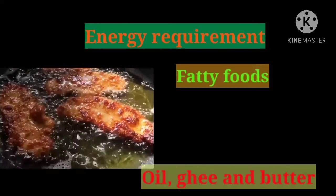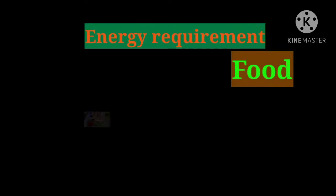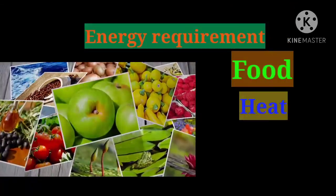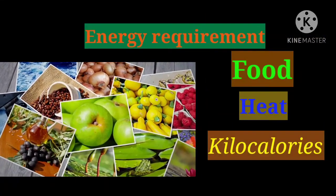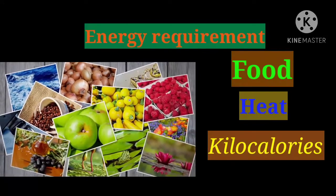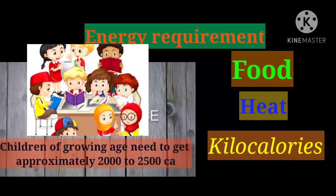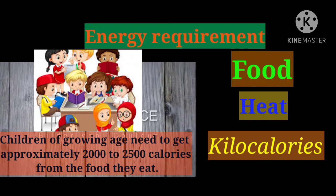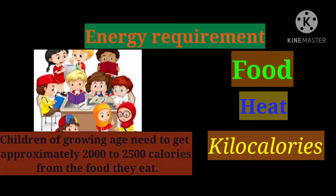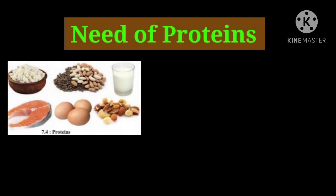We get energy in the form of heat from the food we eat. Heat is measured in kilocalories, hence the energy in food items is also measured in kilocalories or calories. Children of growing age need to get approximately 2000 to 2500 calories from the food they eat.